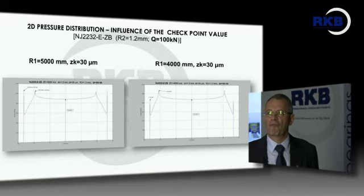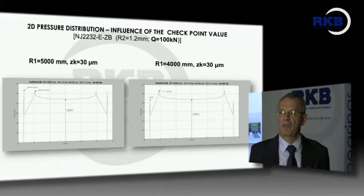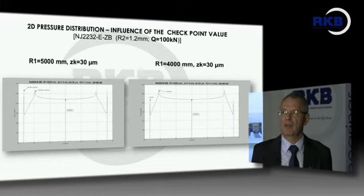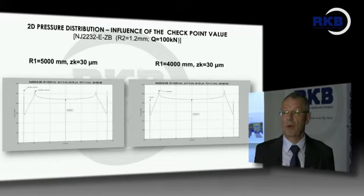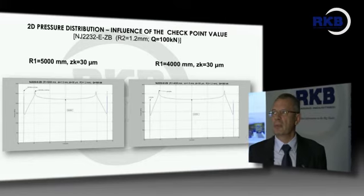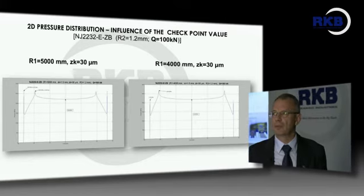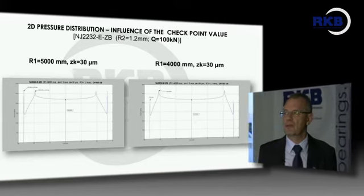For the 100 kN case, we must choose a combination: for example, zk = 30 microns combined with a reduced radius R1. With R1 = 5,000 millimeters and zk = 30 microns, a quite good pressure distribution is obtained. A better solution is R1 = 4,000 millimeters, which provides a good design.